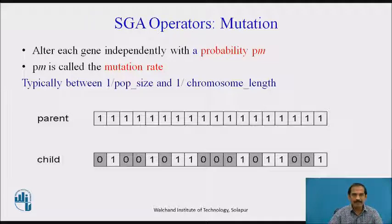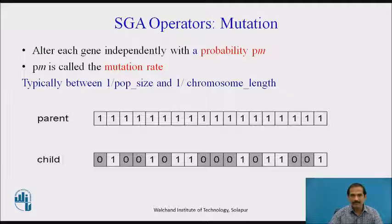The third operator is mutation. We alter each gene independently with the probability pm, called the mutation rate. It is typically 1 over population size or 1 over chromosome length. At each point, we exchange the bits and produce a child which may yield a better objective function and a prospective solution.